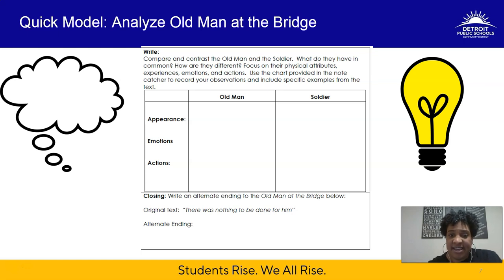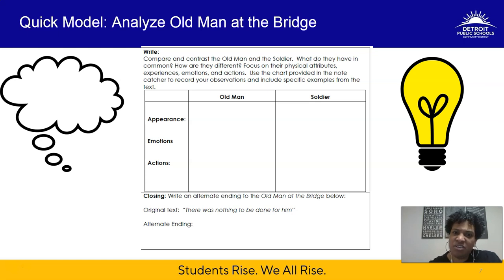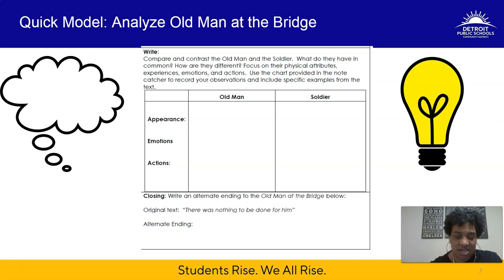After you've done that, revisit the ending of 'Old Man at the Bridge' — remember that killer line: 'There was nothing to be done for him.' If that rubbed you the wrong way, or you thought it was deep — whatever your reaction — this is your opportunity to rewrite the ending. Do you agree that there was nothing to be done? If not, then change it. What could have been done? Maybe the old man could have said something in response, or maybe you want it more dramatic. Use your imagination, get creative, pick up that pen or pencil, and rewrite that ending.